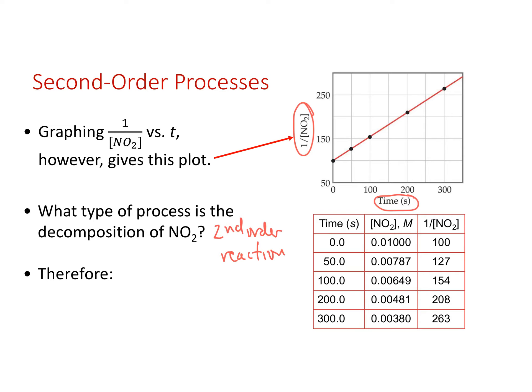The rate law for this reaction would look like rate equals the rate constant times the concentration of nitrogen dioxide squared. Now that we know it's a second order reaction, let's try a calculation.